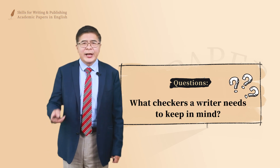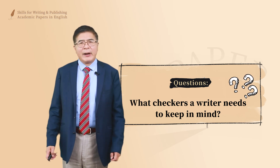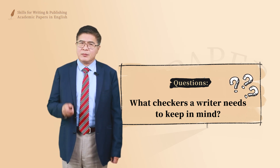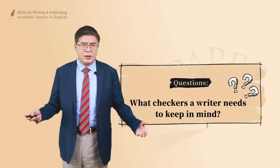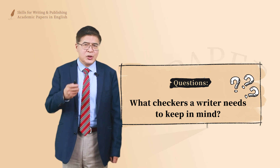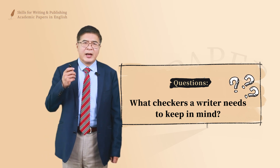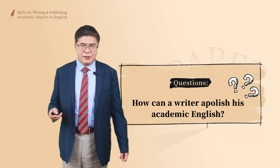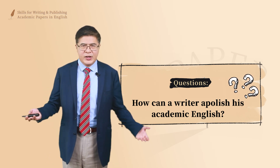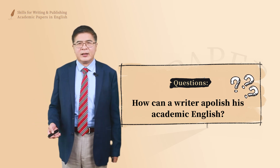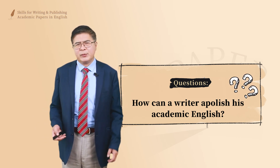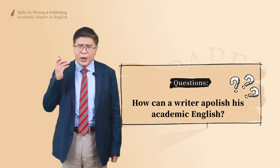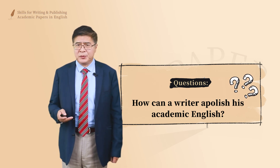The third question is: what checkers does a writer need to keep in mind while writing? The checkers — I mean the points that you have to be mindful of — are the very semantic and lexical requirements that facilitate you to do good academic writing. And the fourth question is: how can a writer polish his academic English writing? In other words, you finish the manuscript and you think it's wonderful, but when you get a native speaker to look at it, he's going to find so many problems. And more importantly, what will an editor recommend you for good writing?